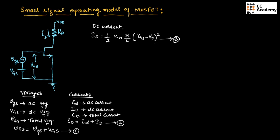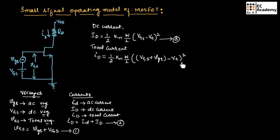The total current can be written as small i capital D = (1/2) · KN · (W/L) · (VGS + vgs − VT)². Here we apply the formula (A + B − C)², taking capital VGS as A, small vgs as B, and VT as C. Expanding: (A + B − C)² = A² + B² + C² + 2AB − 2BC − 2CA.